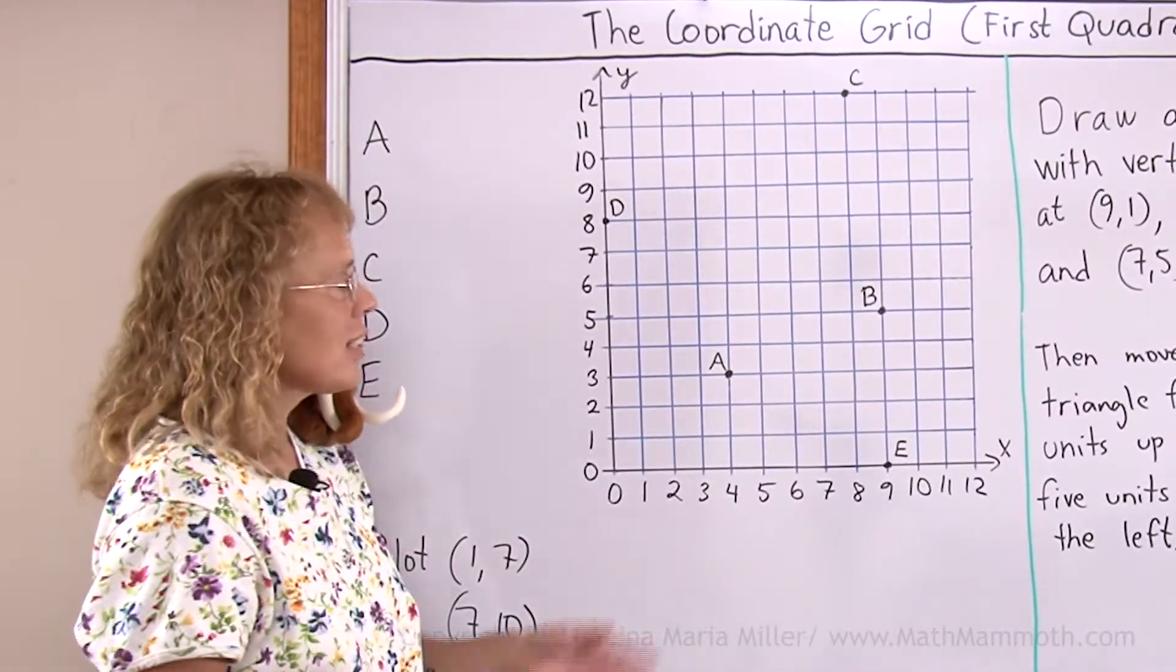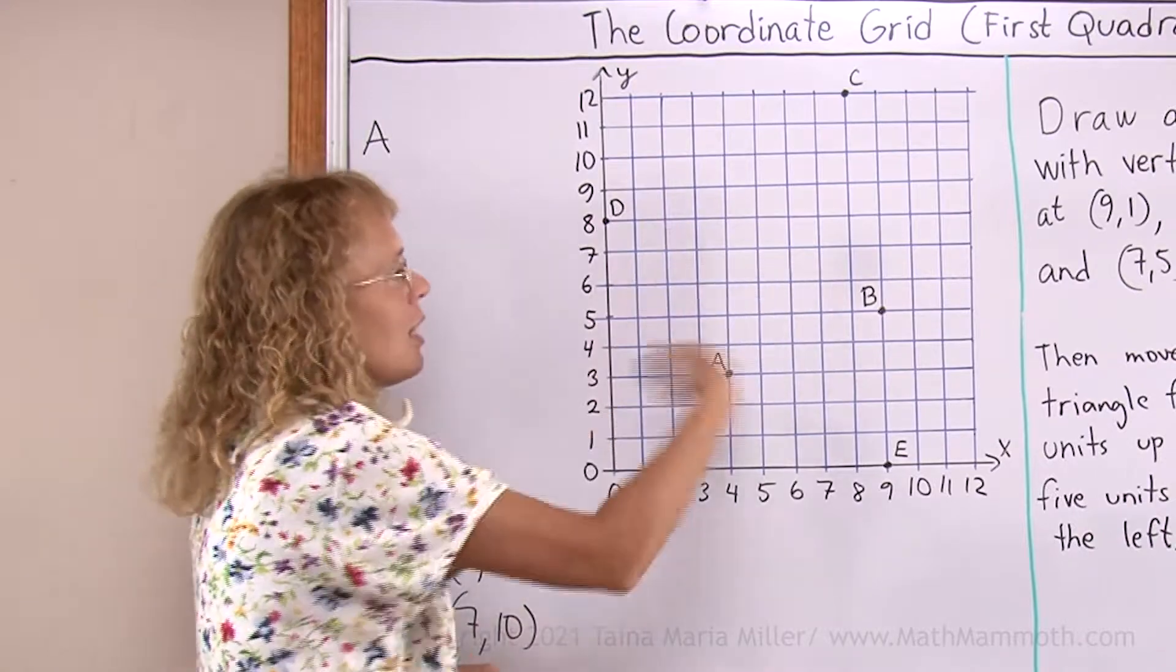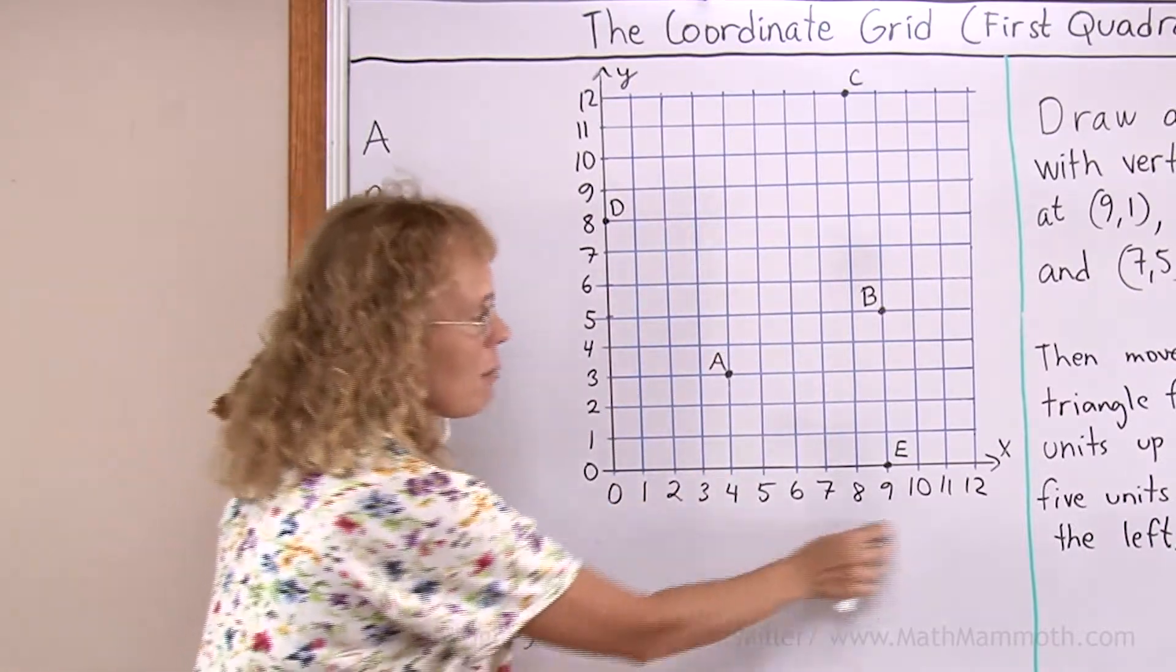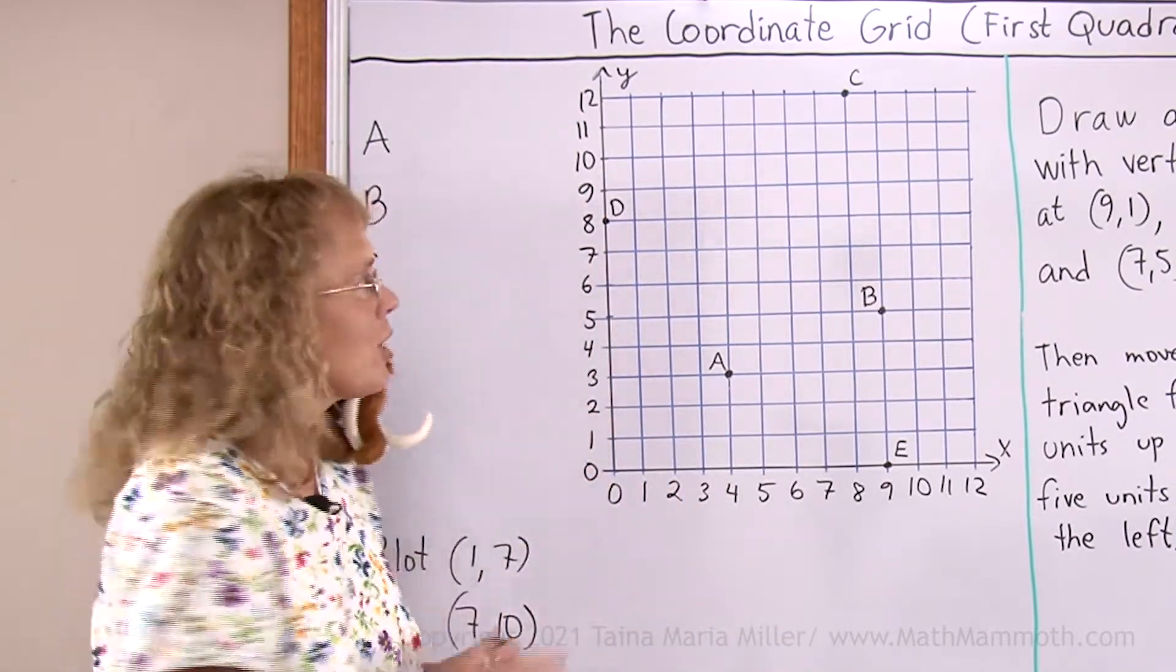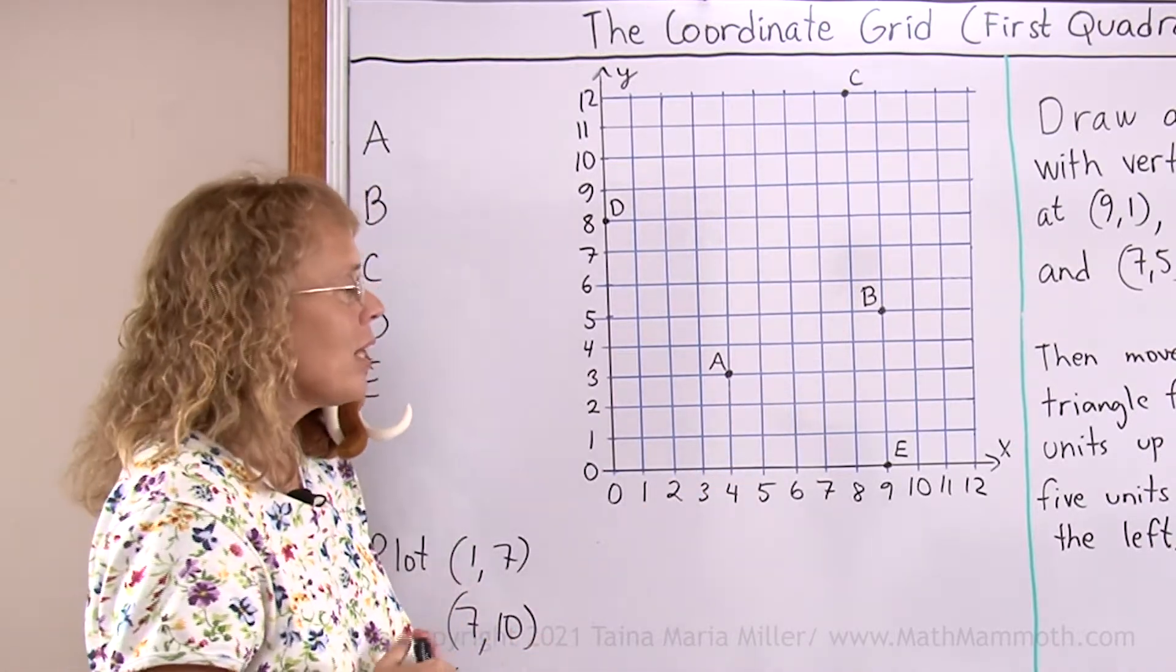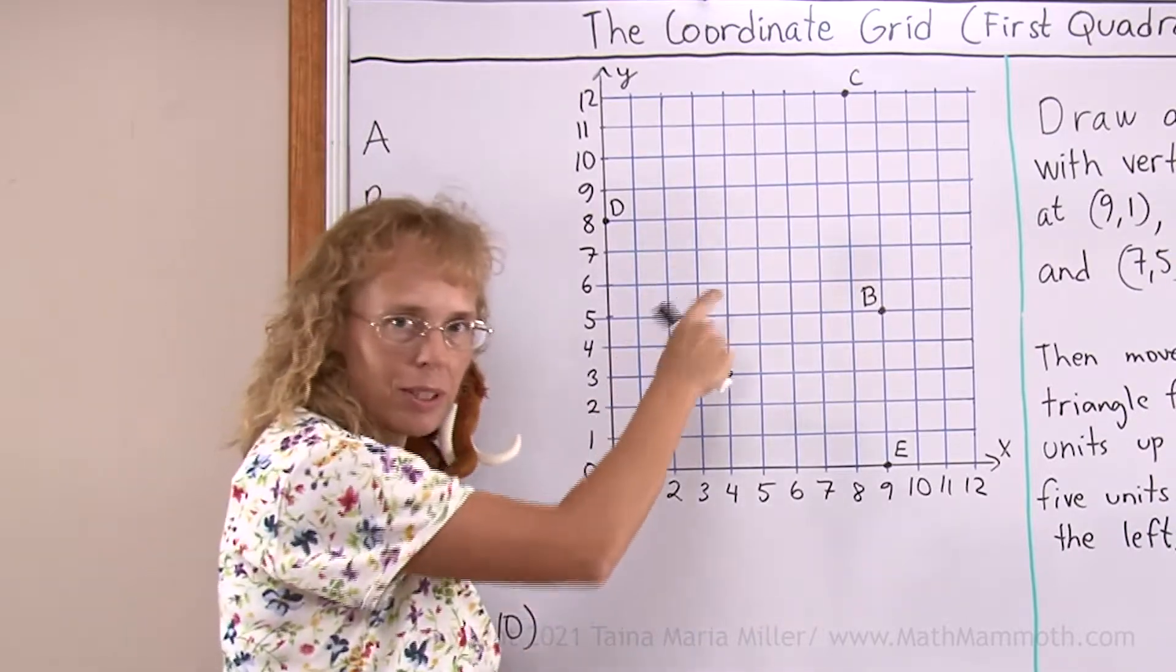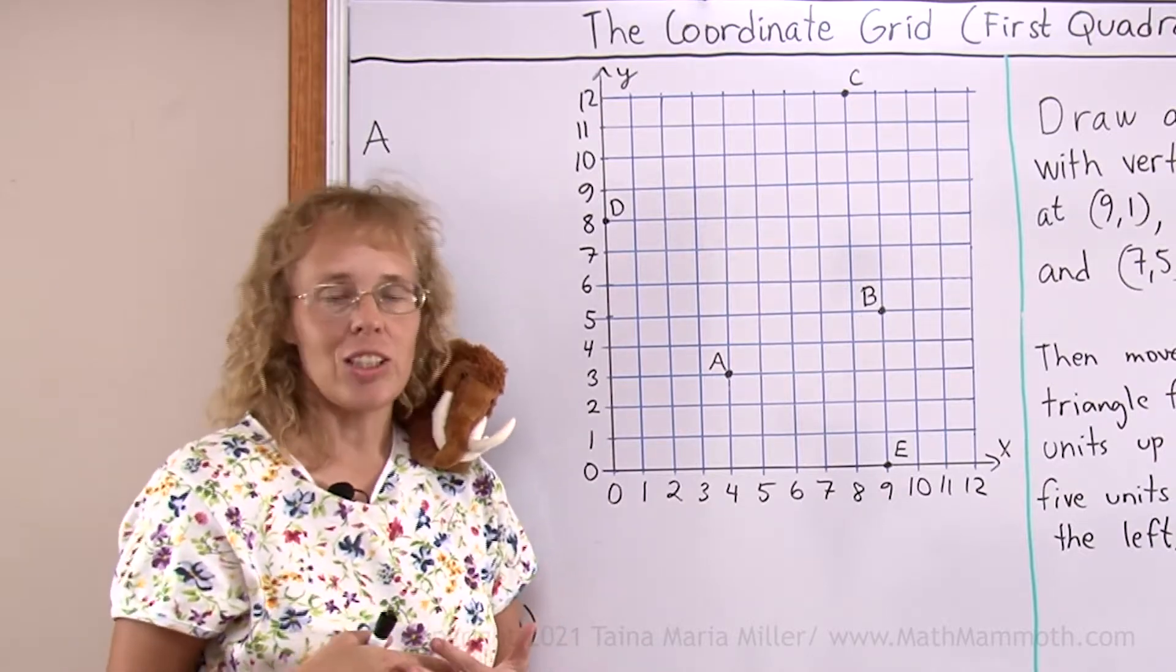Now this is a coordinate grid. It means a grid that has coordinates on it, a coordinate system with numbers running both ways. For each point on the grid we can give two numbers that will give its location. And also if you have two numbers they will define some point. These two numbers are called the coordinates of that point.